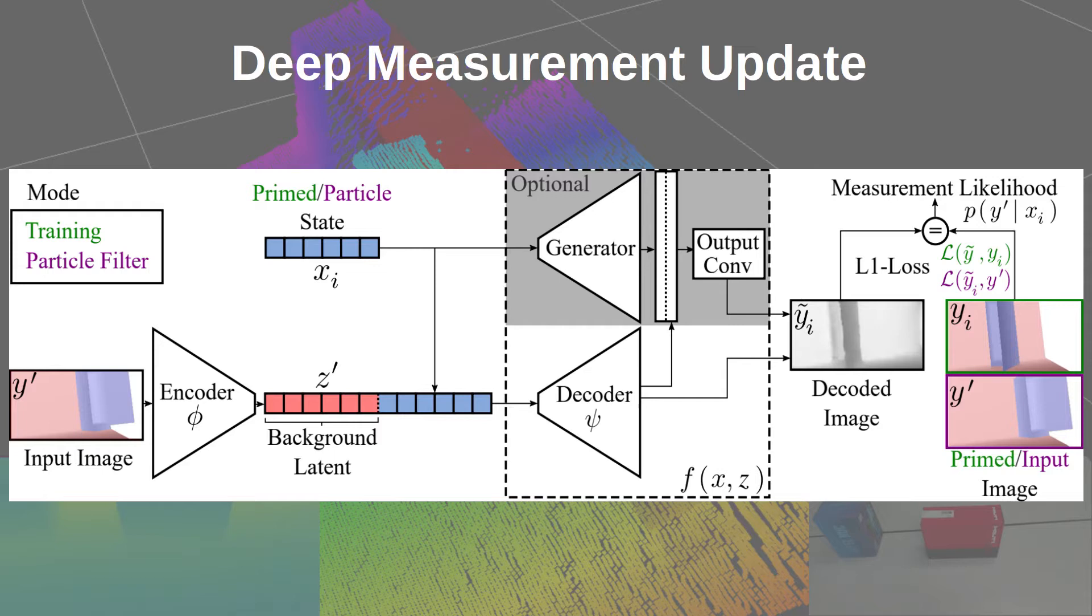Measurement update rules for base filters often contain handcrafted heuristics to compute the observation probability for high dimensional sensor data like images. In this work we propose a novel approach, deep measurement update.